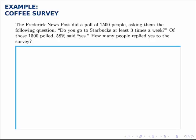This is an example of an applied percentage problem, and we can summarize it by asking the question: what is 58% of 1,500? If we want to translate this into an equation, we remember that 'is' gets replaced with equals, 'of' gets replaced with multiplication, and so our unknown equals 58% times 1,500.